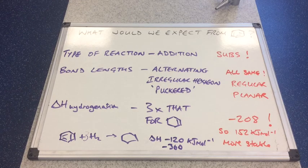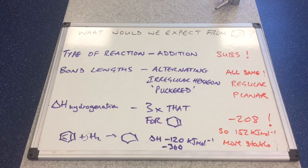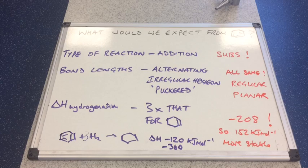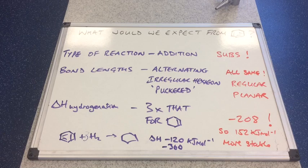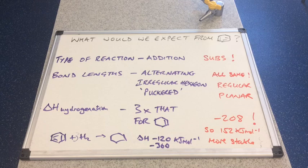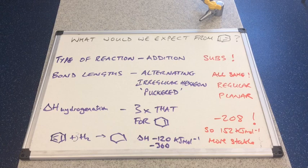The final nail in the coffin for Kekulé's structure is the enthalpy of hydrogenation. Scientists have measured that and it's coming out at minus 208 kilojoules per mole. So that means that benzene is actually 152 kilojoules per mole more stable than we would expect from Kekulé's structure. So there's three pieces of evidence that suggest the alternating carbon-carbon double bond isn't what's going on. So just what is going on?